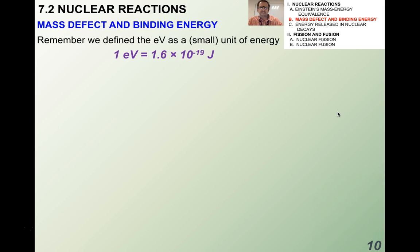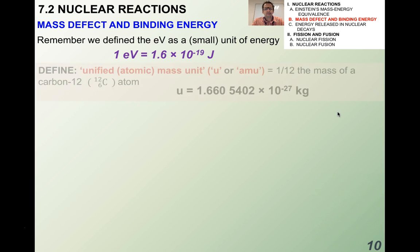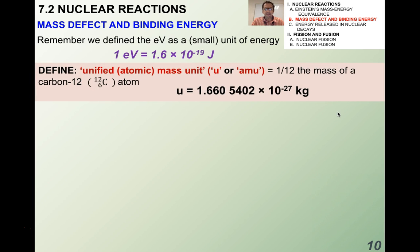Remember when we defined the electron volt? It's a very small unit of energy. I wanted to find something else that's another very small mass. The reason why we use electron volts and atomic mass units, or AMUs, is just to avoid using really, really small exponentials. It becomes very, very tedious.